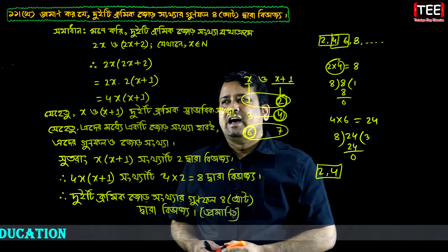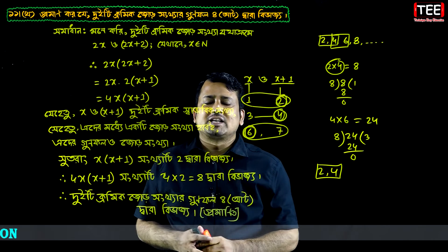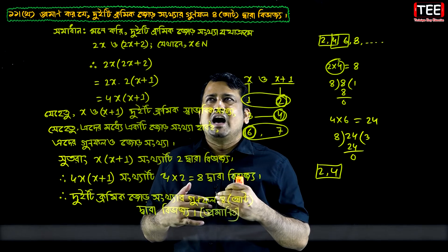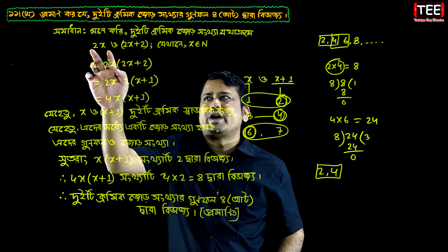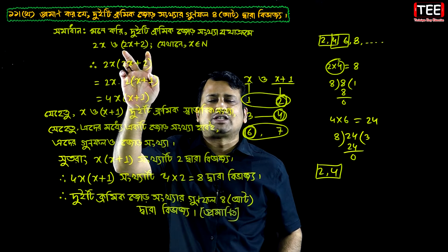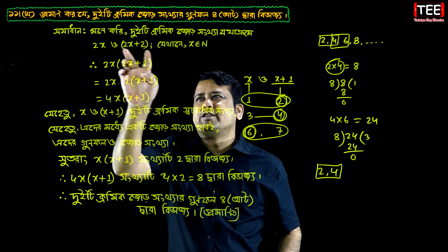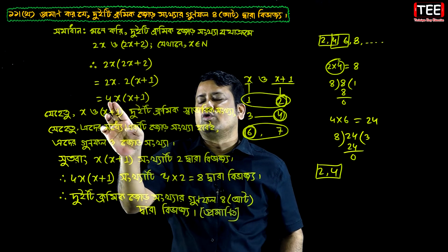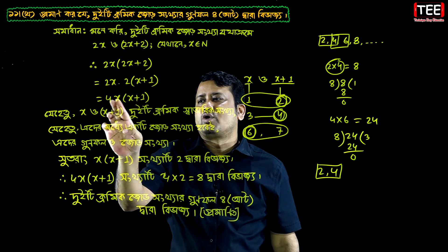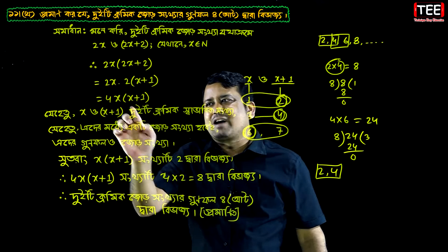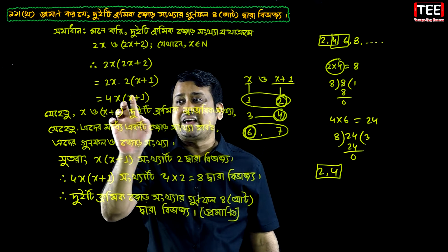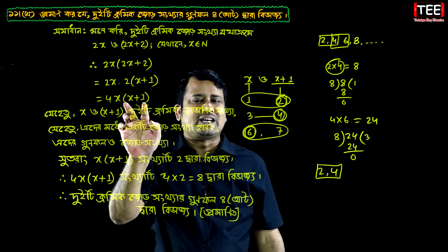We will go through the term. We will tell you that the arithmetic number of the term is 2x and 2x plus 2. We will tell you that the term is 4x into 1. Then x into x plus 1.